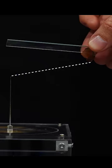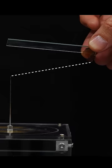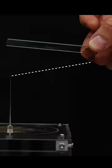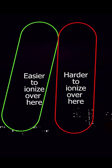So you can see that sparks don't take the shortest path, but they just take the path in which they can ionize the easiest. This is the same thing that's happening in lightning strikes as well.